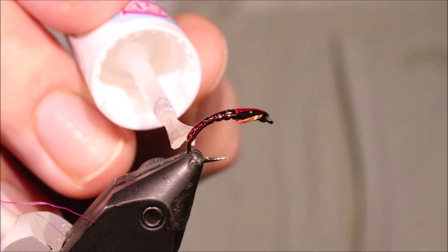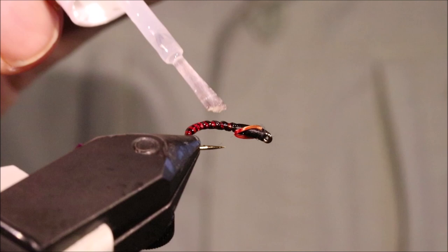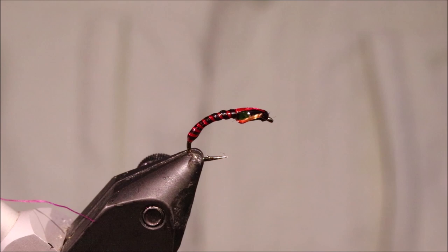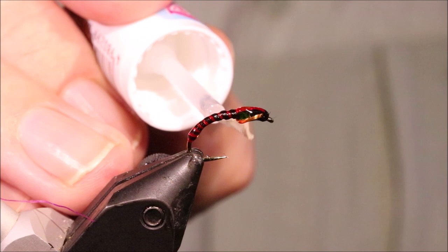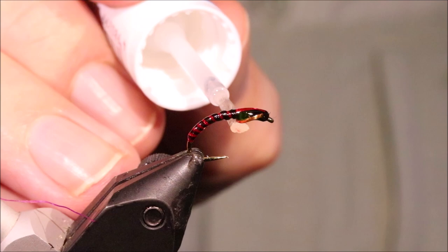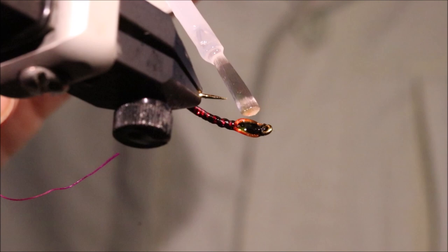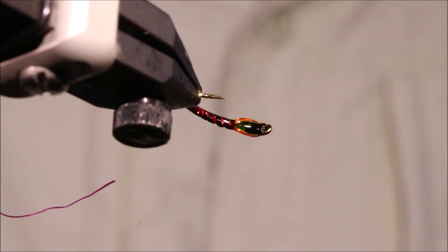So I'll just run a light coat of varnish over the body. It can be a bit heavier at the thorax, there's more thread to absorb it. I'll just make sure everything's covered.